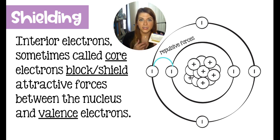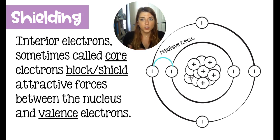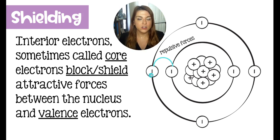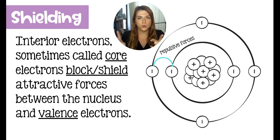All of the trends on the periodic table exhibited down a group are caused by shielding. Shielding is where your interior electrons block or shield any attractive force between the electrons and the nucleus. This outer electron is attracted to the nucleus, but it's less attracted because it's further away. Think of magnets — the further away they are, the less attractive force they feel.